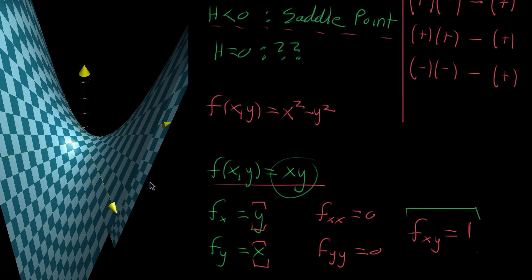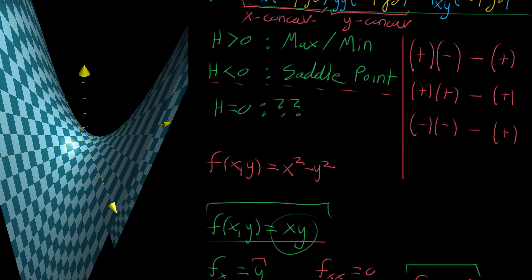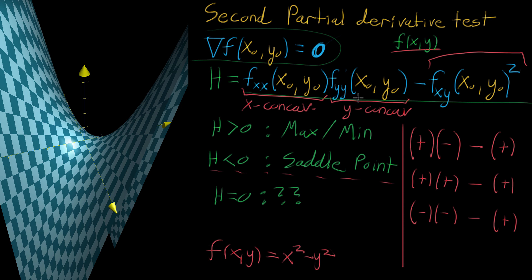For the full rigorous justification, I've written that up in an article with all the dirty details for those interested. But for the intuition: the mixed partial derivative tells you how much your function looks like f(x,y) = xy, which captures all diagonal disagreement. When that term competes with the agreement between x and y directions, if the disagreement wins strongly enough, H becomes negative and you get a saddle point. If the x-y agreement wins out, it's a local maximum or minimum. Hopefully that sheds some light on why this test makes sense. I'll see you next video.